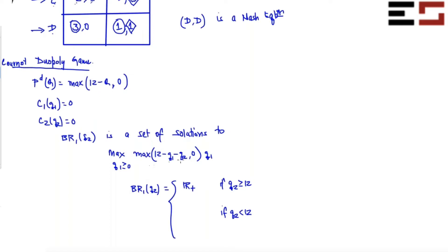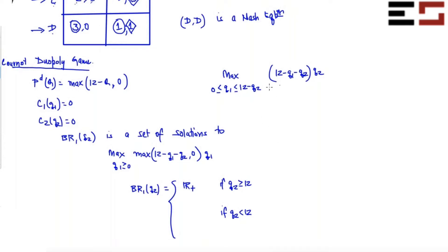If Q2 is less than 12, I have an option to choose more than 12 minus Q2. But if I choose more than 12 minus Q2, I'll end up making revenue 0. But I can do better — if I choose Q1 smaller than 12 minus Q2, then this term will be positive and I'll make positive profit. So if Q2 is less than 12, the best response lies in the interval from 0 to 12 minus Q2. Choosing a best response in this interval is equivalent to choosing the best Q1 on the entire real line.